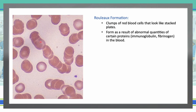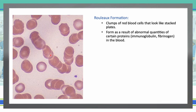Rouleaux formation: stacking of cells facilitates the rate of red cell sedimentation, a phenomenon that may be seen on peripheral smear. Rouleaux appearance may be artificially caused by poor preparation of the smear or by viewing the slide in a thickened area. When rouleaux formation is truly present, it is caused by an increase in proteins such as immunoglobulins and fibrinogen. We are going to see rouleaux formation — clumps of red cells that look like stacked plates — in multiple myeloma and macroglobulinemias.